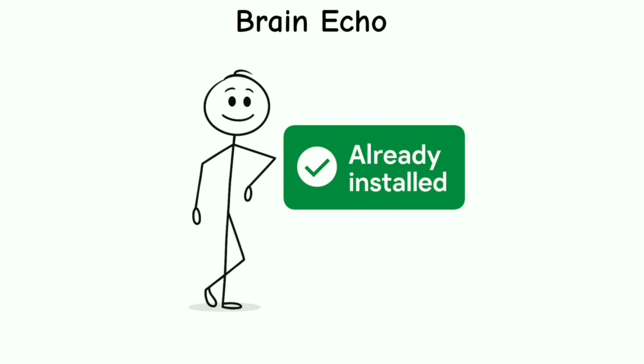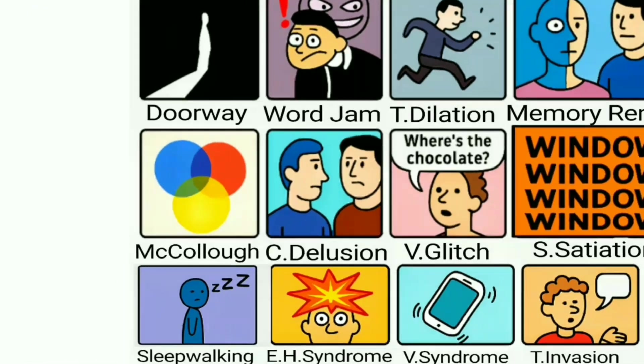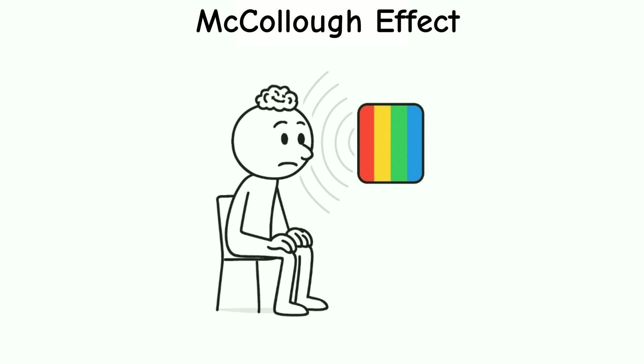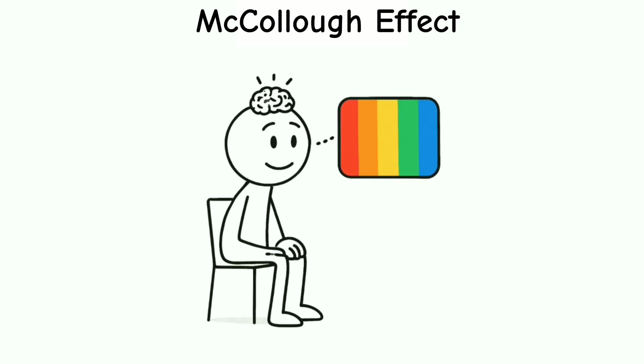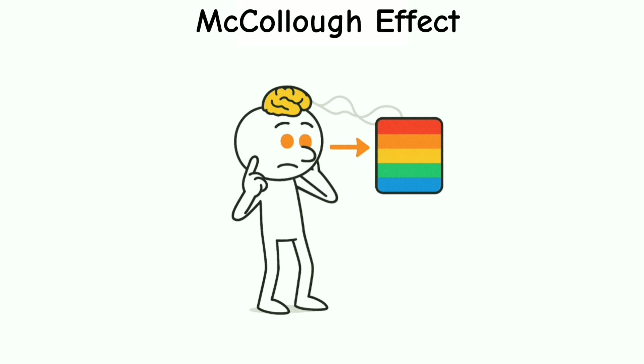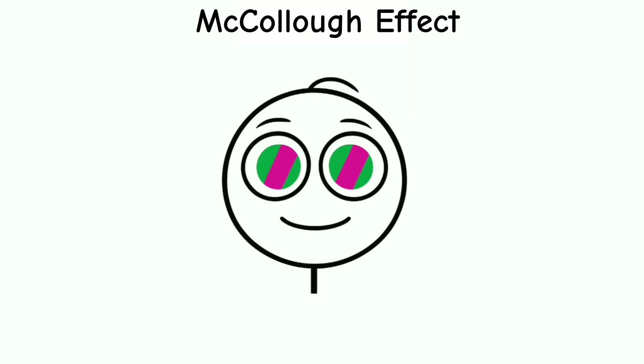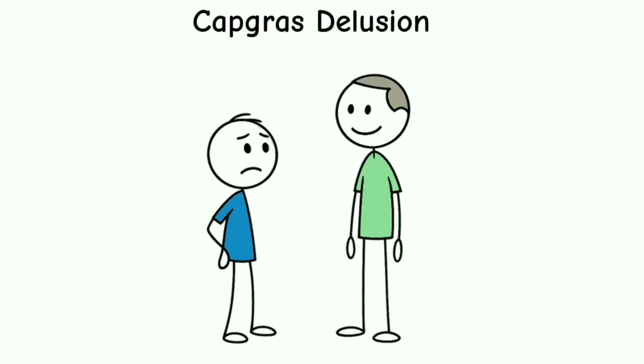McCollough's effect: stare at certain colored lines too long and your brain keeps showing you color even when it's not there. This glitch can last hours or days. Your brain literally rewires your vision for a while based on nothing more than pattern repetition. It's like applying an Instagram filter onto your actual eyeballs.